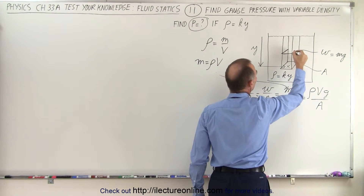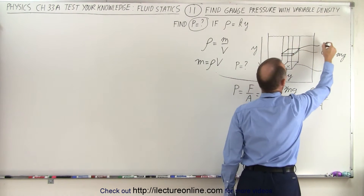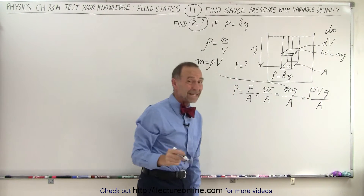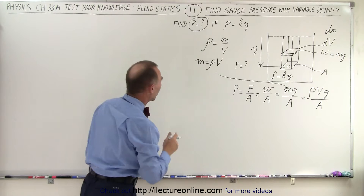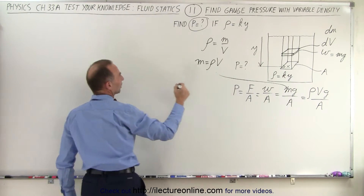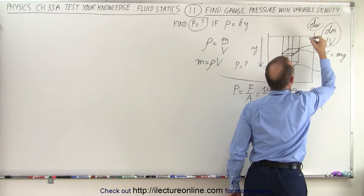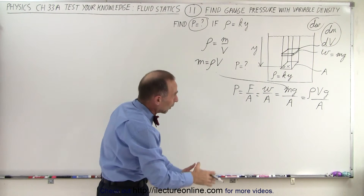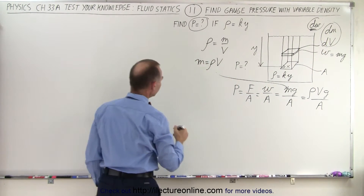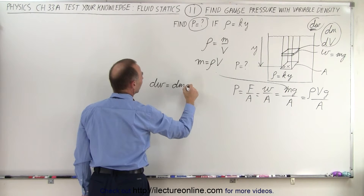What we need to do is take a small volume element containing a small amount of mass dm. We need to plug that in and then integrate over the entire volume. We'll calculate the small amount of weight — let's call that dw. So we have dm, dv, and dw to deal with. Since we want the total weight of the column, let's define a small differential dw.